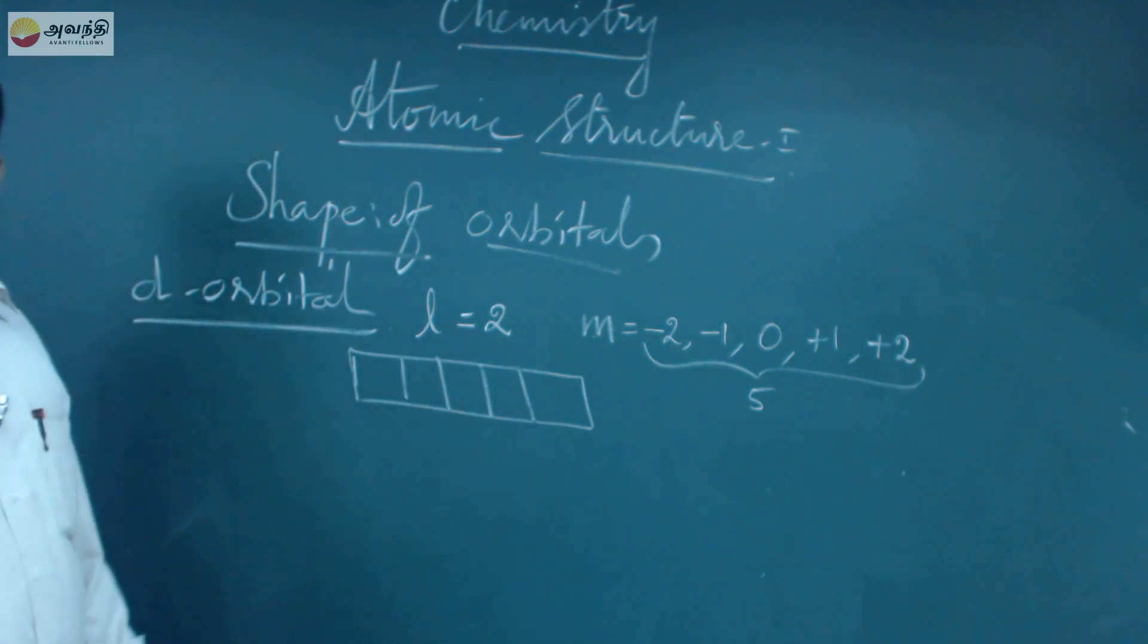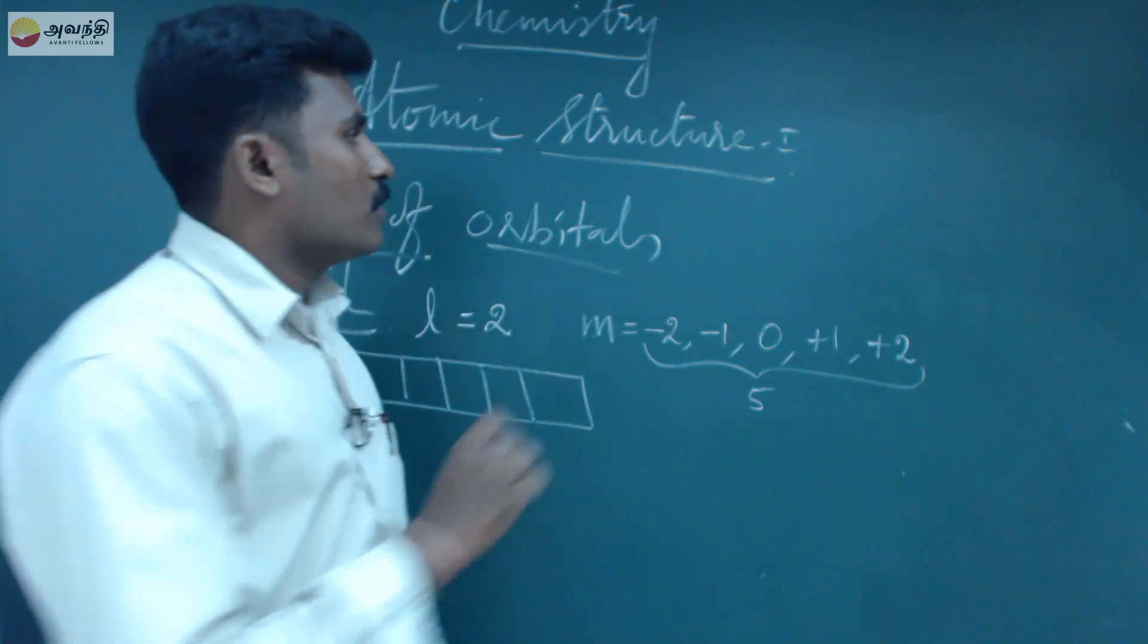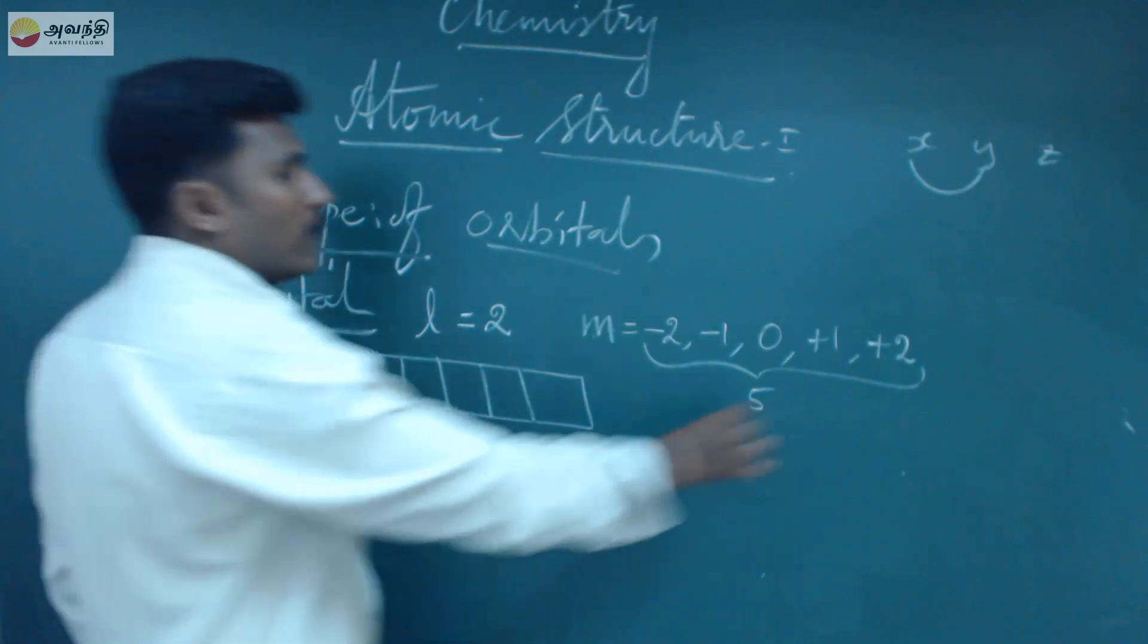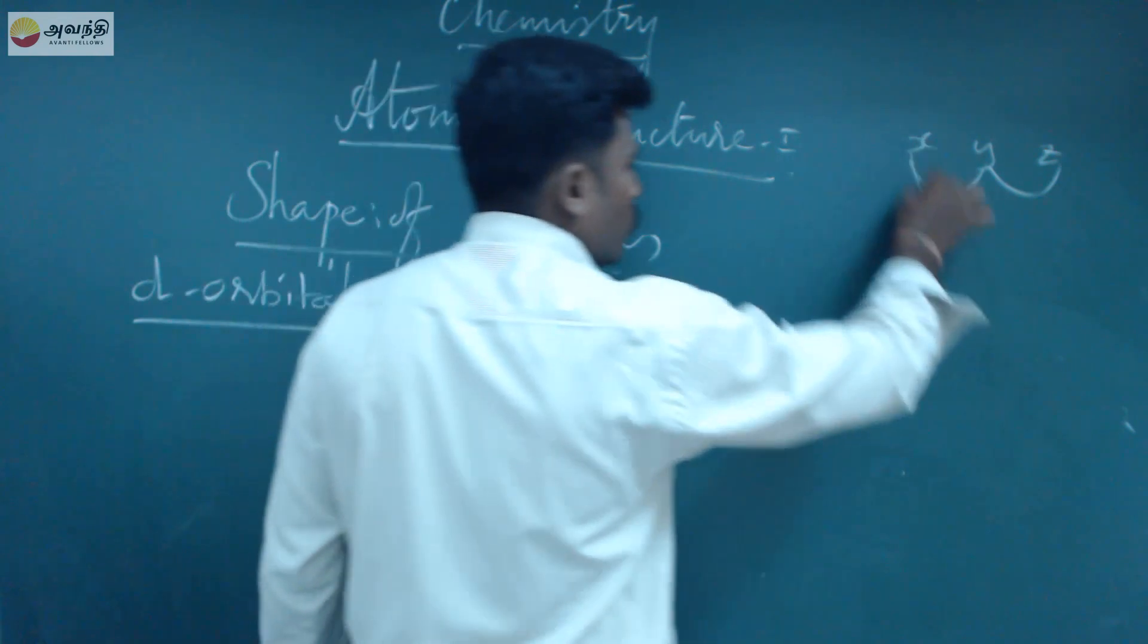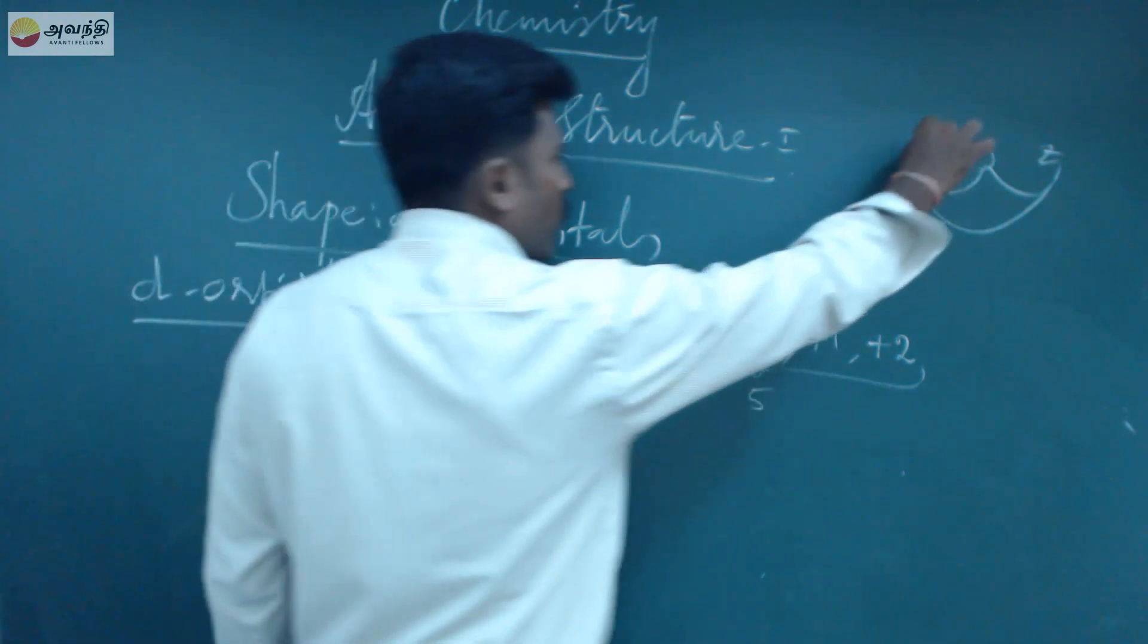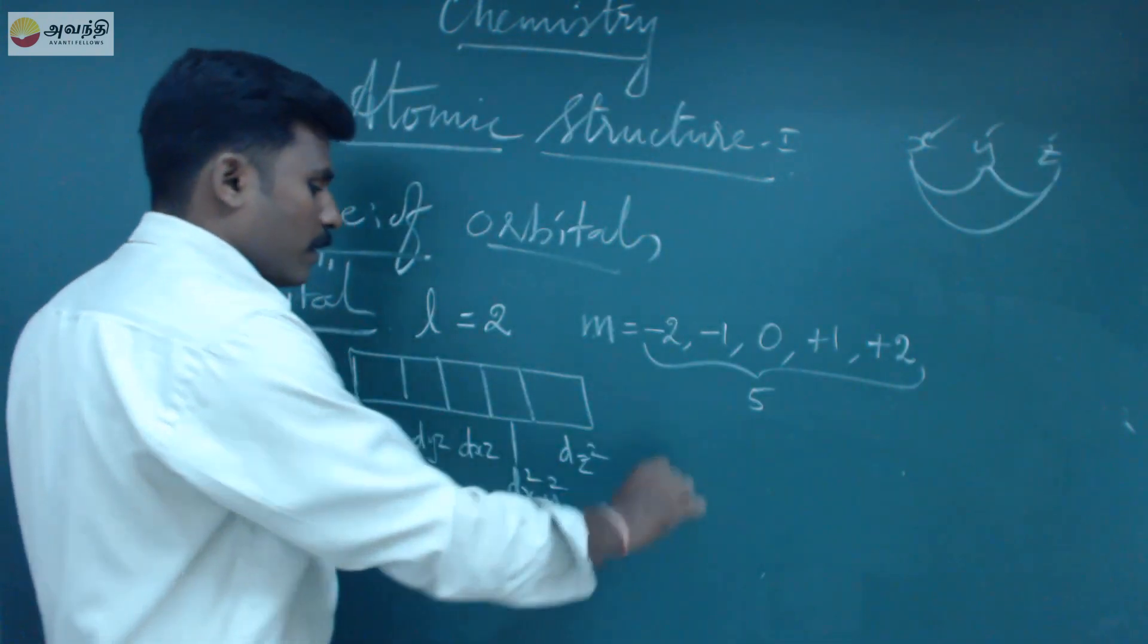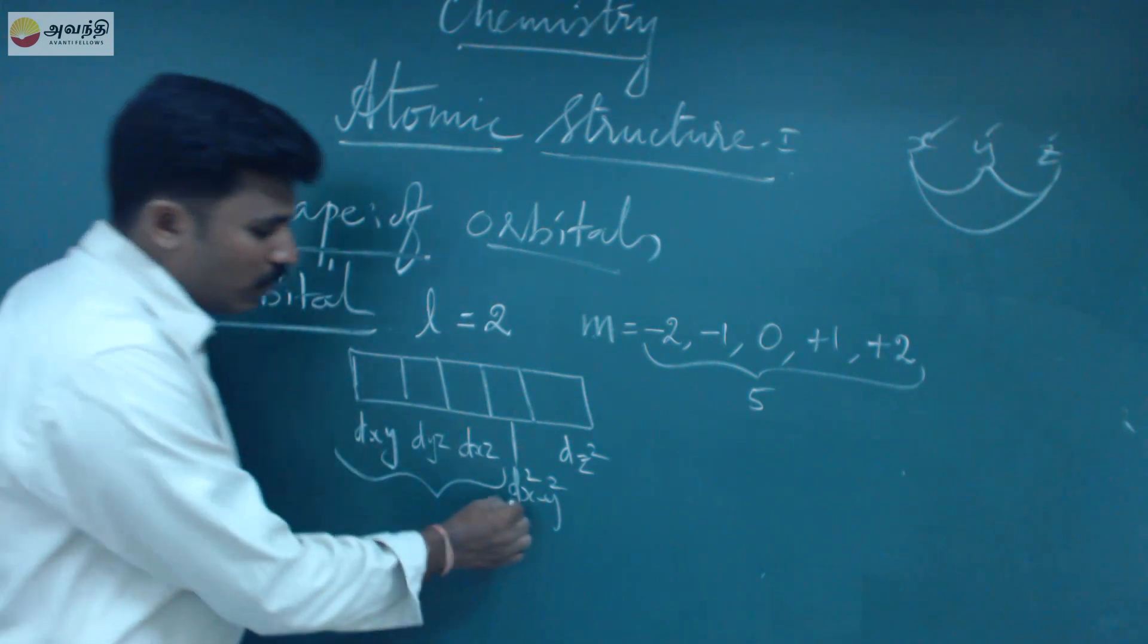What are they? dxy, dyz, dxz, and dx² minus y², and dz². First, these two give dxy. Then these two give dyz. Then these two give dxz. Then this square minus this one gives dx² minus y². Then this is dz². This is the shape and type of d orbitals.